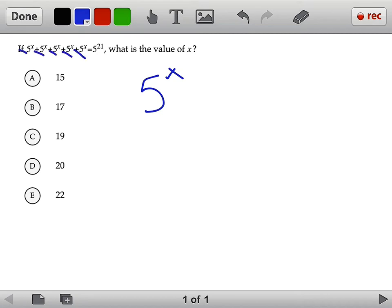So on the left-hand side we have 5 times 5 to the power of x. And on the right-hand side we have 5 to the power of 21. If you recall, when you see 5 alone, it is actually 5 to the power of 1.